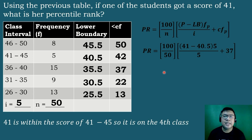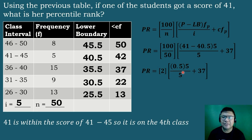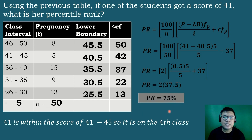Simplifying: 100 divided by 50 equals 2; 41 minus 40.5 equals 0.5; times 5 over 5 — these cancel out — giving 0.5 plus 37, which equals 37.5. Then 2 times 37.5 equals 75. So the percentile rank is equal to 75%. Interpreted: 75% of the scores of the students are less than 41, while 25% of the scores are greater than 41.